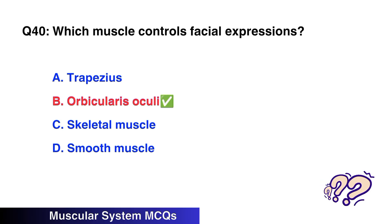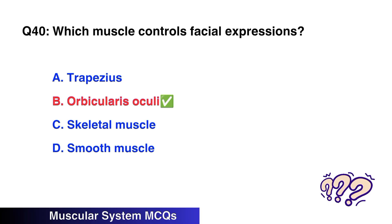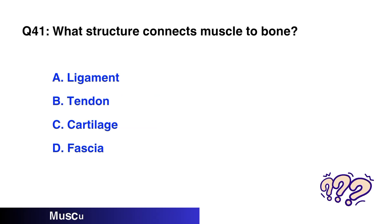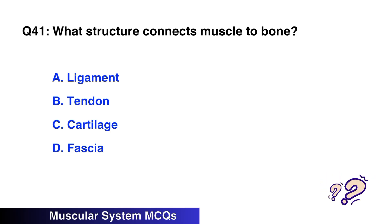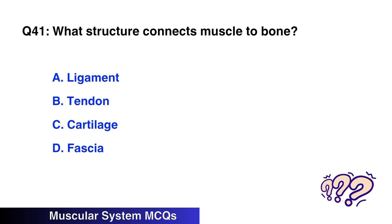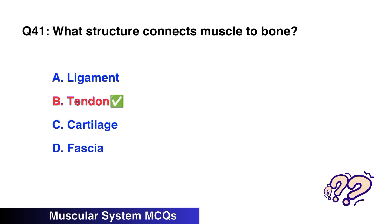Question No. 40: Which muscle controls facial expression? The right option is B: Orbicularis oculi. Question No. 41: What structure connects muscles to bones? The right option is B: Tendon.